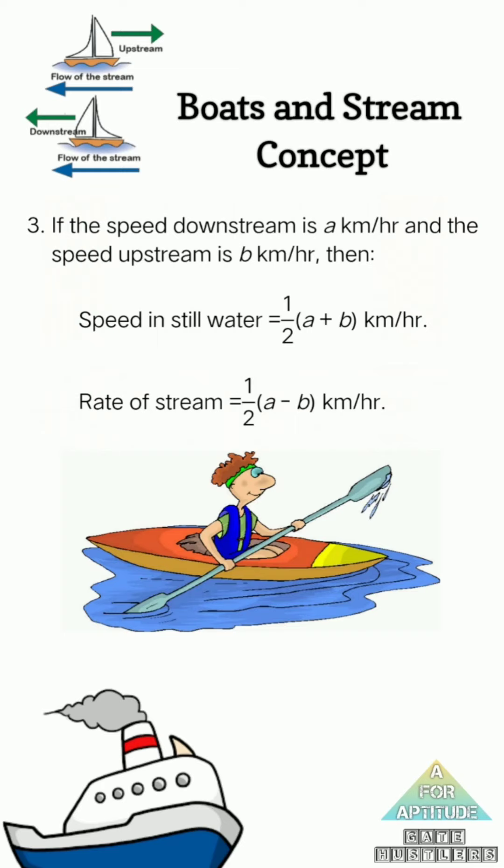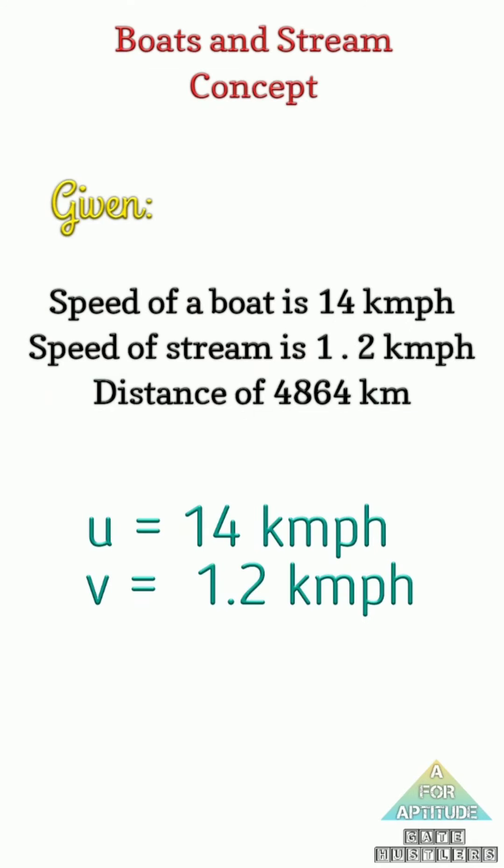If you are going to the problem: the speed of a boat is 14 km per hour, speed of a stream is 1.2 km per hour, distance is 4864 km twice. Now the speed of a boat, u is equal to 14, v is equal to 1.2.